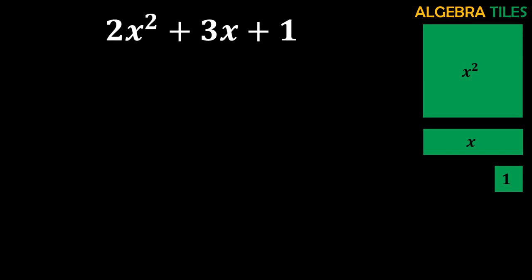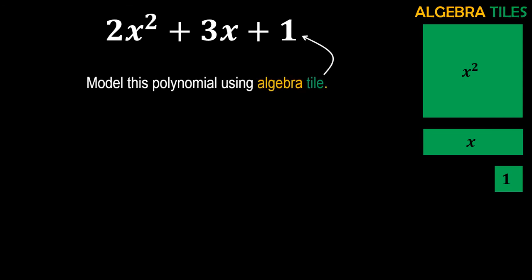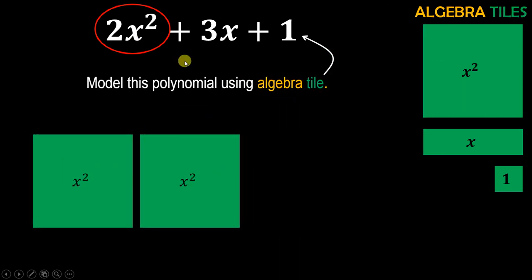So far we have discussed all three tiles of algebra tiles, and now we will show you how you can use them to model polynomials. We are taking the same polynomial we started the video with and going to model it using these algebra tiles. In this polynomial you can start with the first term, which is 2x squared. Since this is the x squared term, you use the x squared tile to represent it. For 2x squared you take this square tile a total of 2 times, because 2 is the coefficient.